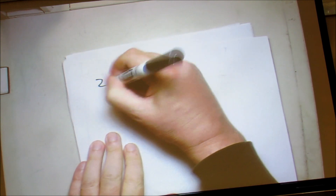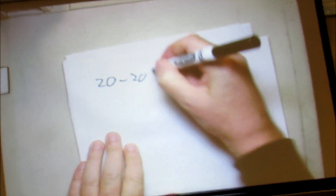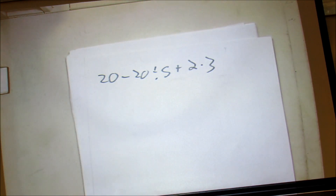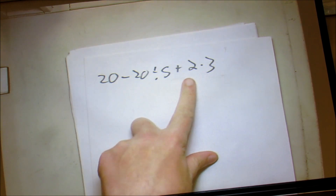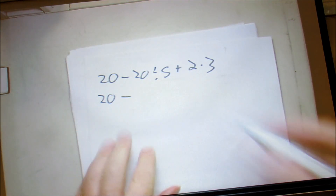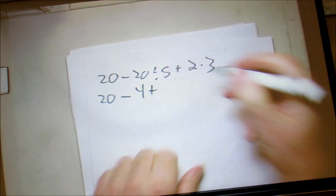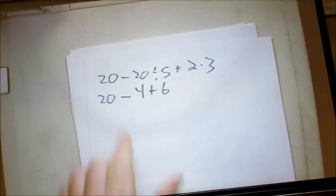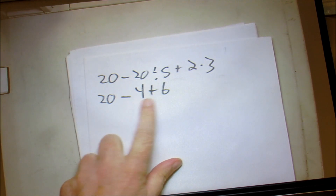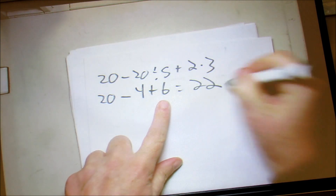If we have a longer one — say 20 minus 20 divided by 5 plus 2 times 3 — we have to do the order of operations. We do multiplication and division at the same time: 20 divided by 5 is 4, and 2 times 3 is 6. Now we do everything in order: 20 minus 4 is 16, plus 6 equals 22.